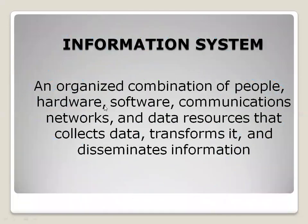What is an information system? It is an organized combination of people, hardware, software, communication, and data resources. Hardware includes monitors, keyboards, and mobiles. Software includes Microsoft Office, .NET, and programming languages. Communication includes the type of network you use — wireless or wired. Data resources cover how resources are managed and data is collected. This is all related to the information system.